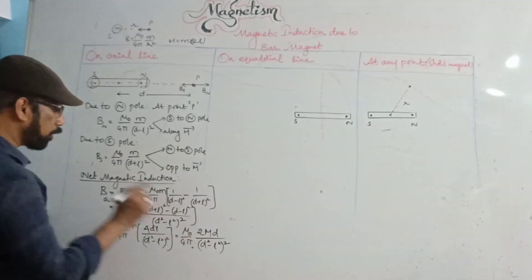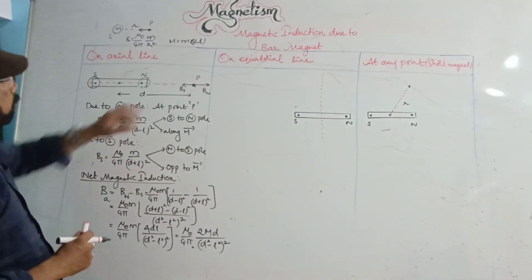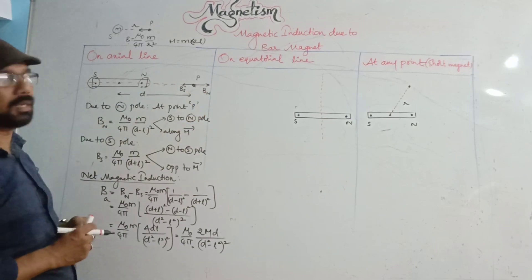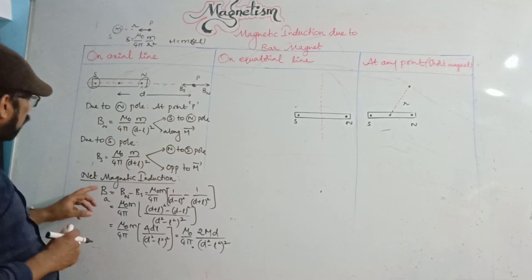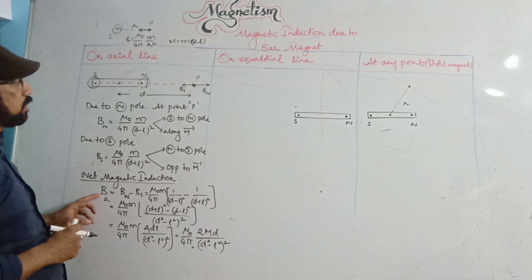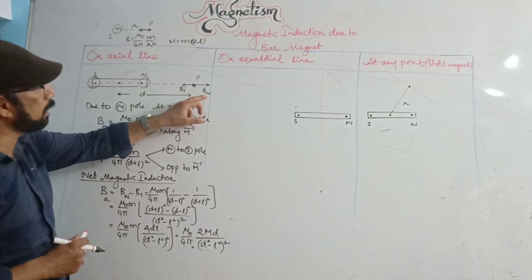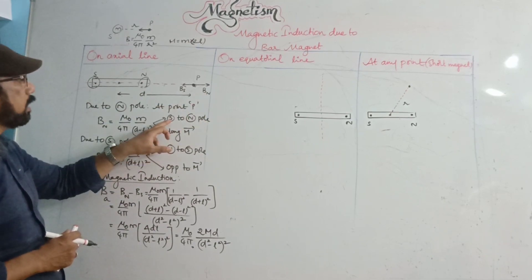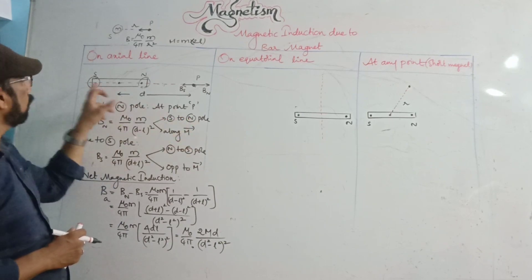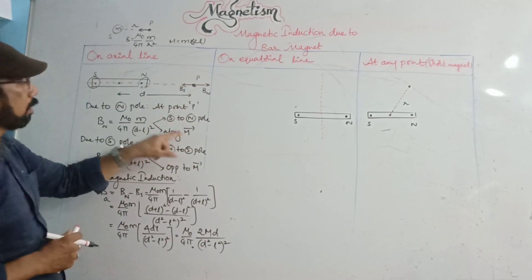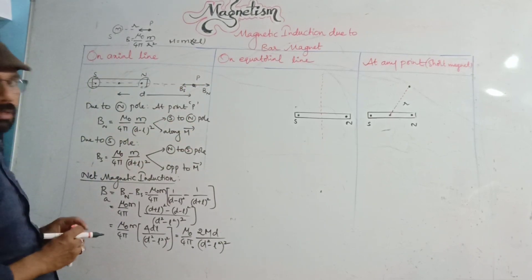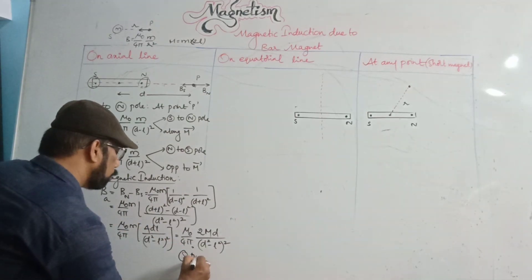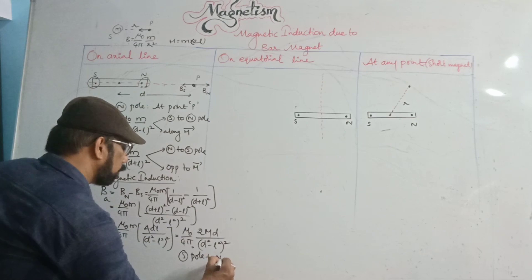The direction: since BN is greater than BS, the net value is in the same direction as BN. BN is directed from south pole to north pole — along M bar. So the direction of net B on the axial line is from south pole to north pole, i.e., along M bar.